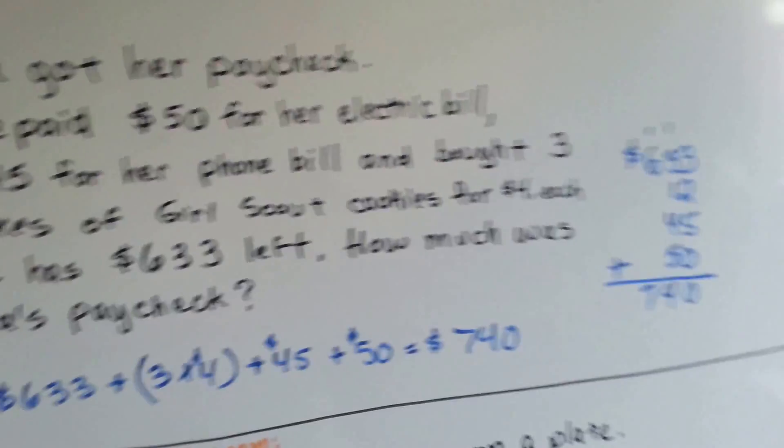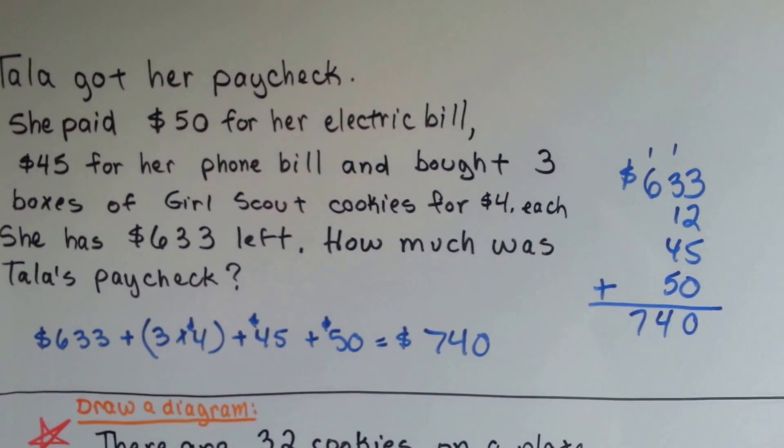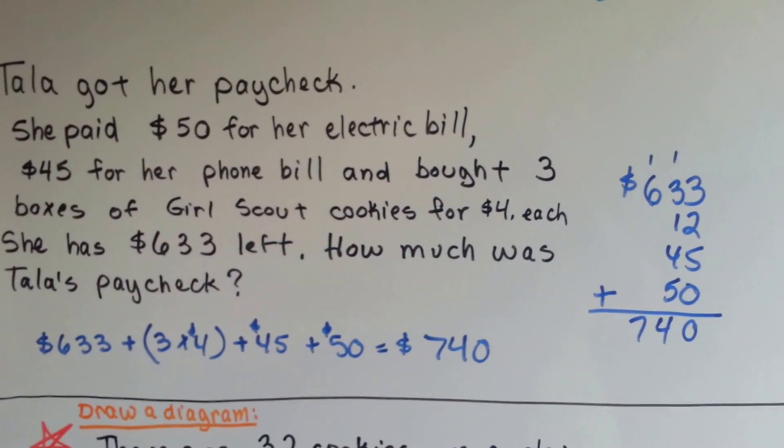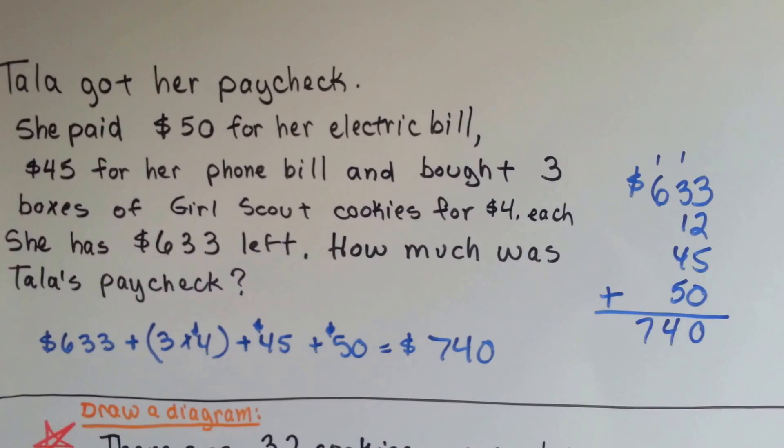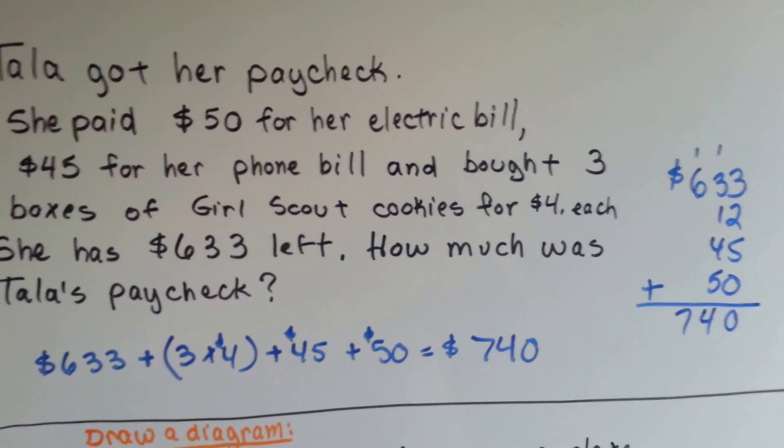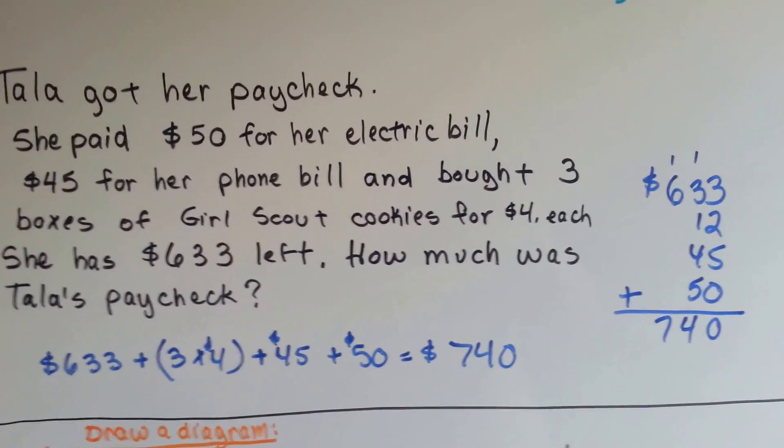Here's an easier one. Tala got her paycheck, and she paid $50 for her electric bill, $45 for her phone bill, and bought three boxes of Girl Scout cookies for $4 each. She has $633 left of her paycheck. So how much was her paycheck?